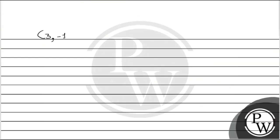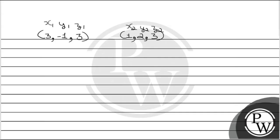Question में जो हमें points दिये हैं वो हैं (3, -1, 3) और (1, 2, 3) — यह है x1, y1, z1 और यह है x2, y2, z2. Formula लगाते हैं तो: x minus 3 divided by 1 minus 3, which is equal to y minus (-1) divided by 2 minus (-1), which is equal to z minus 3 divided by 3 minus 3.